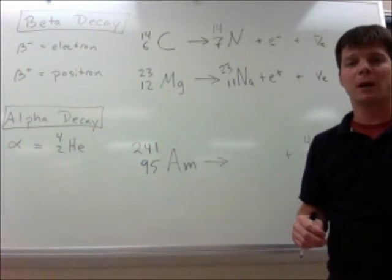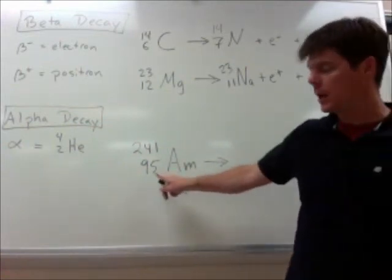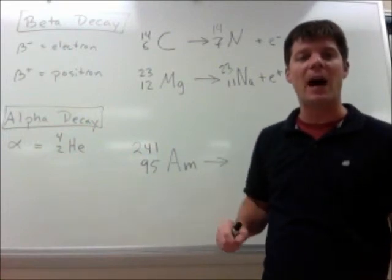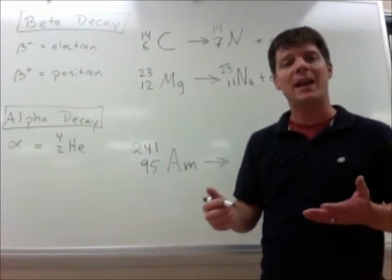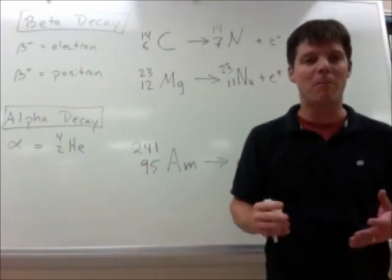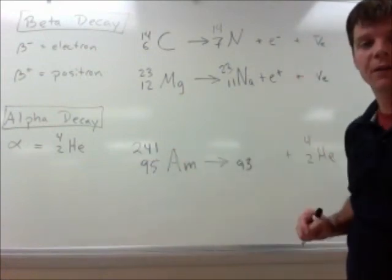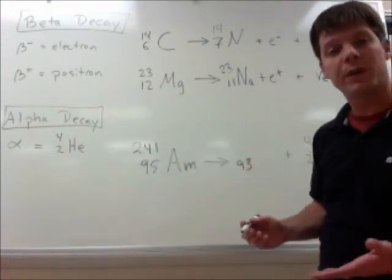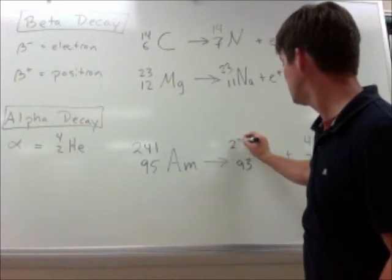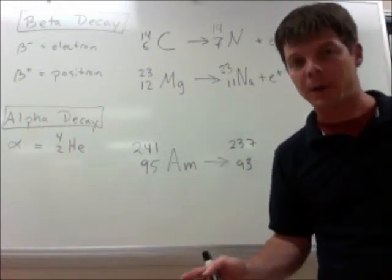I know that I have an atomic number here of 2. Here my atomic number was 95, so I'm going to be producing an element with an atomic number of 93. The mass number here was 241. I'm going to subtract the 4 from that, so I'm going to find 237.